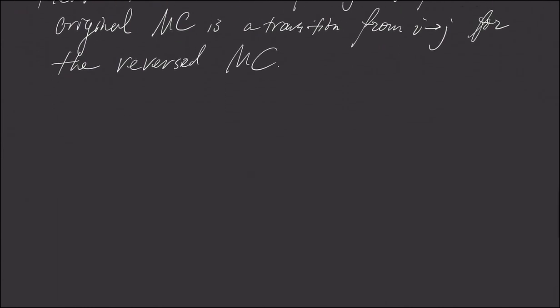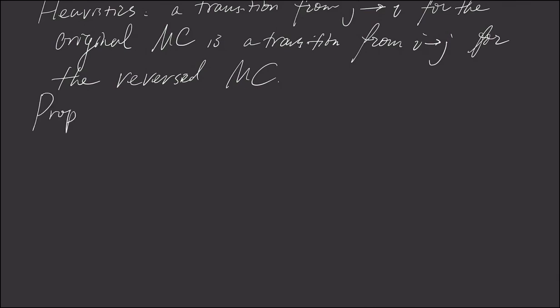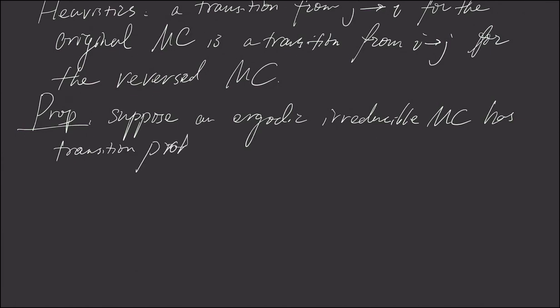And now, let's show the following proposition. Suppose our setting is 0. We have an ergodic, irreducible Markov chain. If, if the variable x_i has a transition probability matrix, I'll say, just transition probability P_ij.